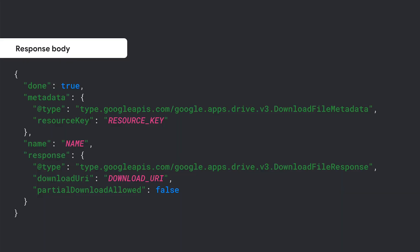A long-running operation is an API method that takes a longer time to complete than is appropriate for an API response. Instead of having the user wait, it's better to return some type of promise to the user and allow them to check back later. When calling the files.download method, the response body consists of a resource representing a long-running operation.